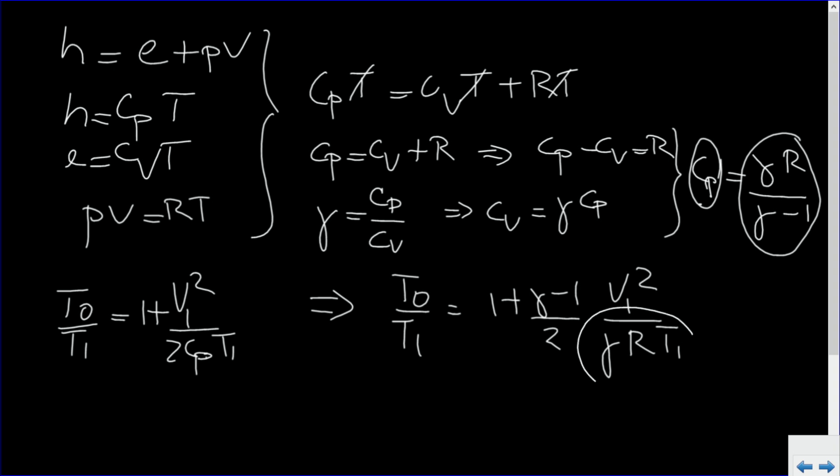Now, maybe you recognize this expression here. It is A1 squared. So basically what we found is that T0 divided by T1 is 1 plus gamma minus 1 divided by 2 times M1 squared.